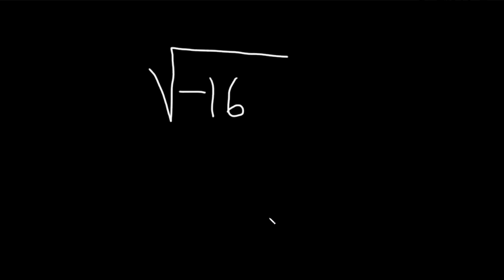Hi, in this problem we're going to simplify this. We have the square root of negative 16. And so the trick is whenever you see a negative sign under a square root, it automatically becomes an i.